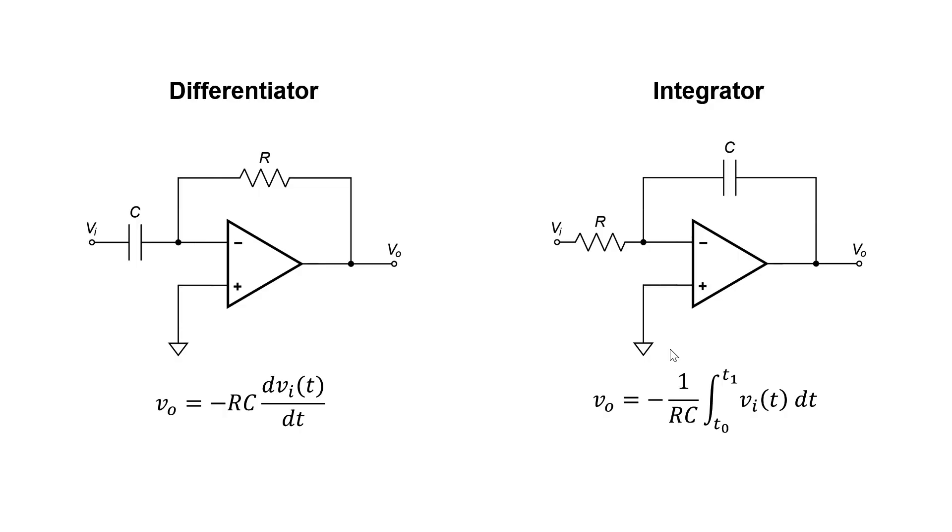They're actually really simple circuits. The only difference between the differentiator and the integrator is the position of the resistor and the capacitor. The actual value of the resistor and the capacitor don't matter too much because it's just a constant that sits in front of the differential, or a constant that just sits in front of the integral.